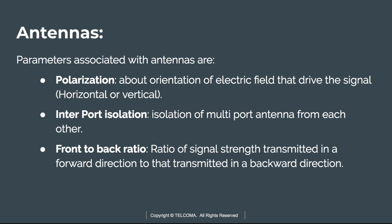The next parameter is interport isolation — the isolation of multi-port antennas from each other. In dual polarized antennas there are two waveguide ports, and interport isolation separates these ports electromagnetically. Typically, 35 dB is the minimum isolation, also known as port-to-port isolation. High isolation reduces the complexity and level of filtering required at the antenna.